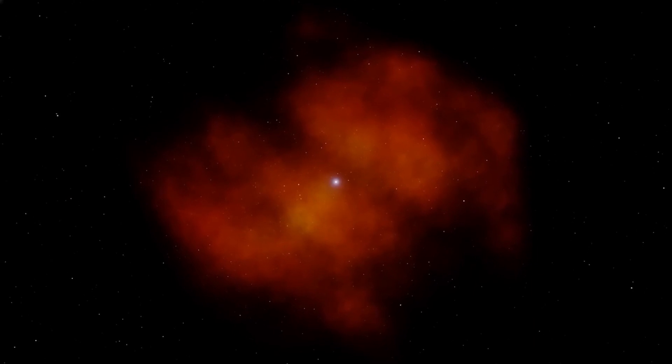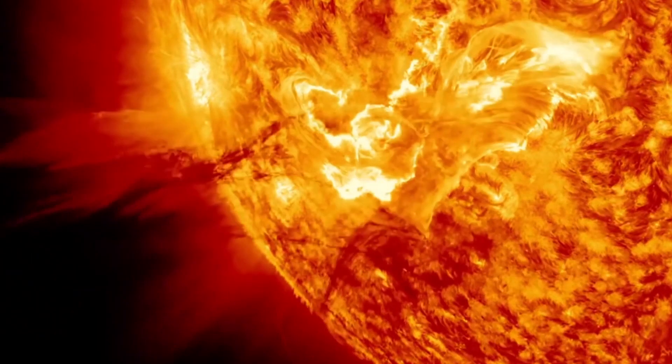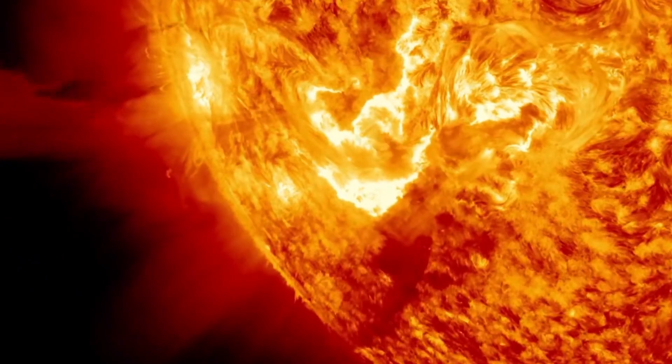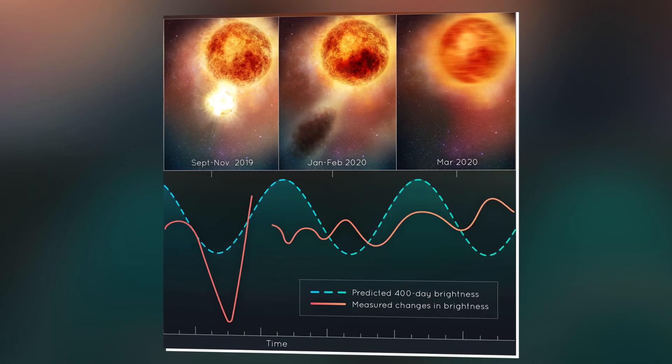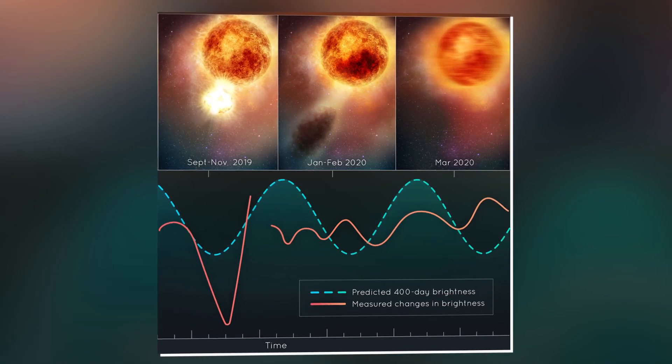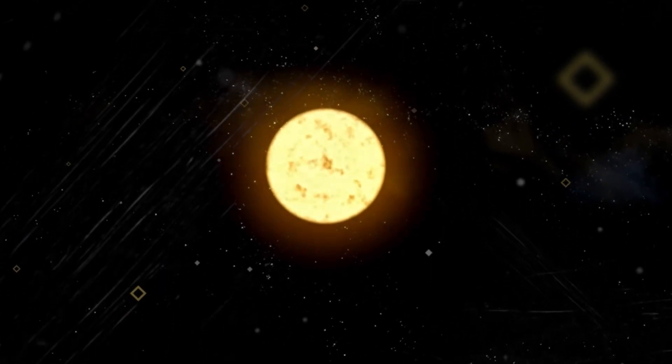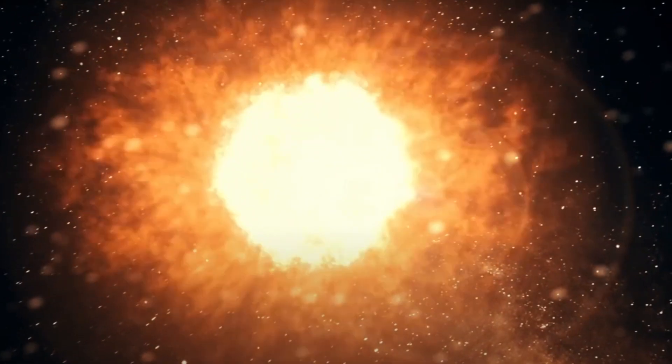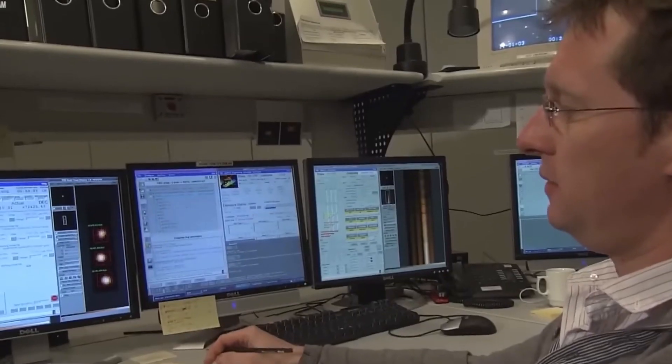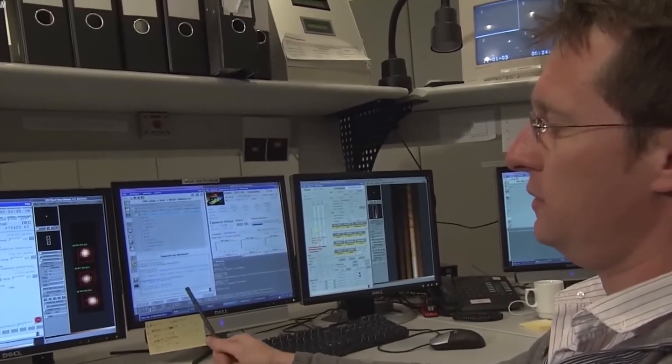However, something unusual happened in 2019. Betelgeuse suddenly expelled a chunk of its outer layers, causing a violent event. Ever since then, the star's cycles of brightness have been acting differently. Instead of taking the usual 400 days, these cycles have become shorter. It's like the star's behavior has changed, and scientists are intrigued by this unexpected twist.